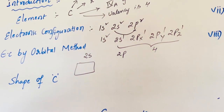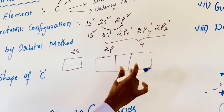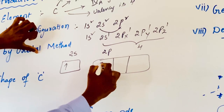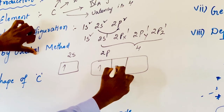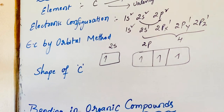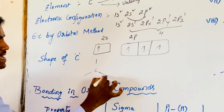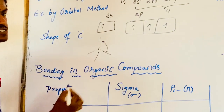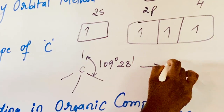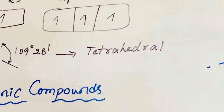The number of degenerate orbitals in the s subshell is 1, and for the p subshell it is 3. Coming to the shape of carbon atom — due to tetrahedroncy, carbon has a tetrahedral shape with a bond angle of 109.28 degrees.